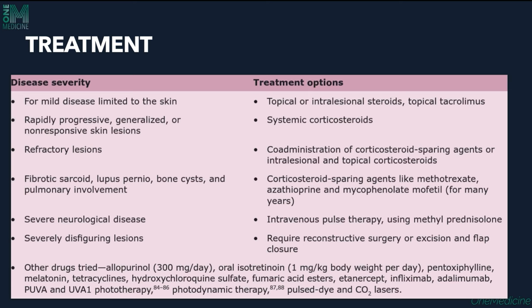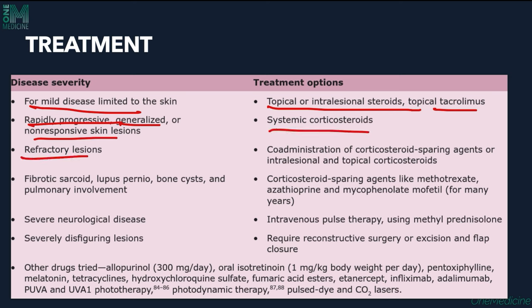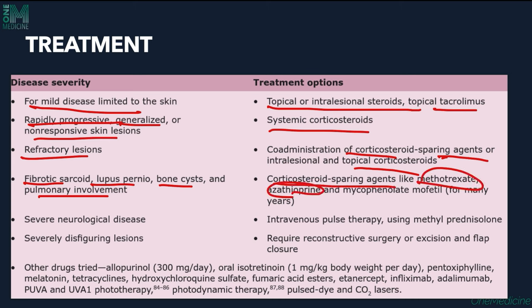For mild disease, topical or intralesional steroids and topical tacrolimus are used. For rapidly progressive, generalized, or non-responsive disease, systemic steroids are given. For refractory lesions, steroids with steroid-sparing agents are used. For fibrotic sarcoid, lupus pernio, bone cysts, and pulmonary involvement, corticosteroid-sparing agents like methotrexate, azathioprine, and mycophenolate mofetil are given.